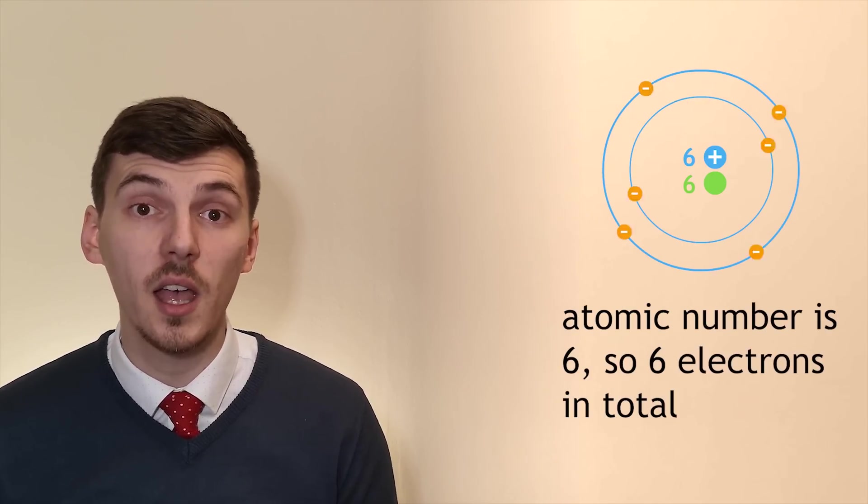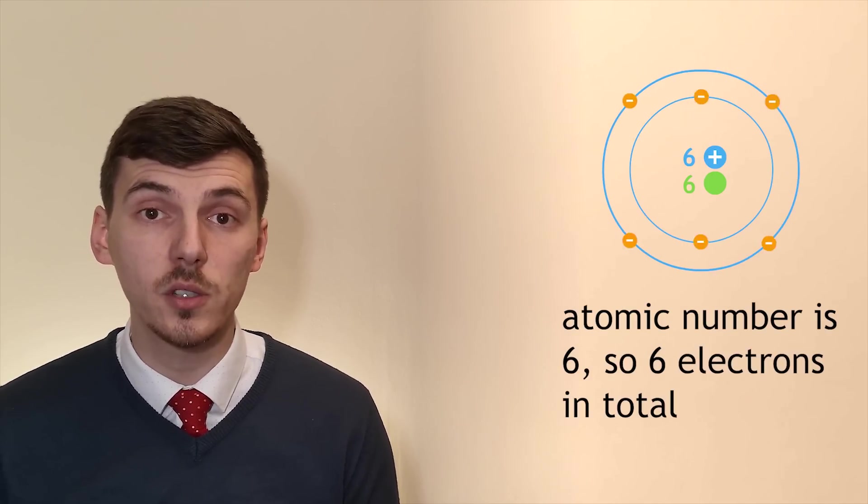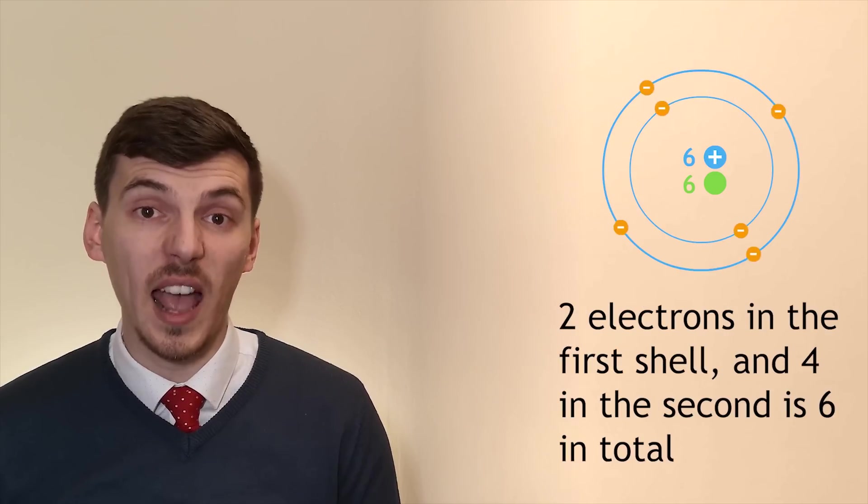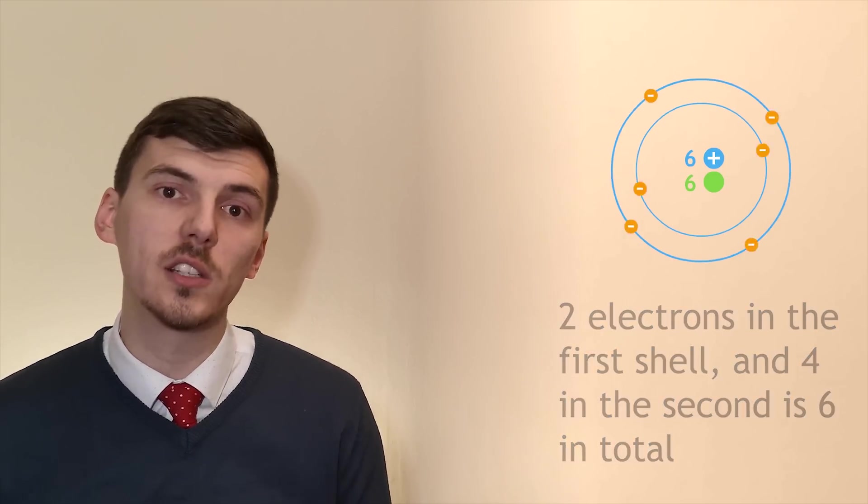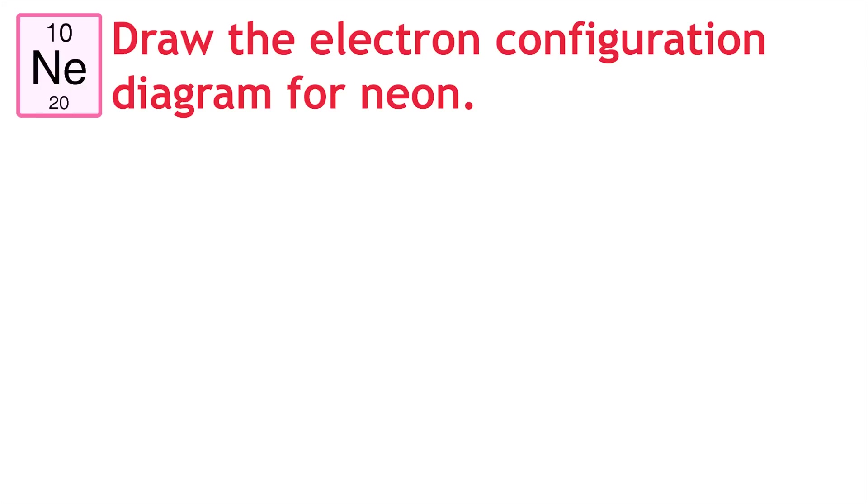We can double-check this because we know its atomic number is 6. That means it's gonna have 6 protons and 6 electrons and because it's got 2 in the first shell and 4 in the second we know that it's got 6 overall. Why not have a go at working out the electron configuration diagram of neon using the grid reference method from the periodic table. Pause the video now to wait for the answer.